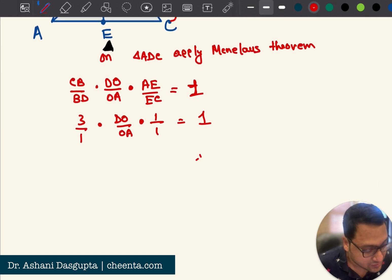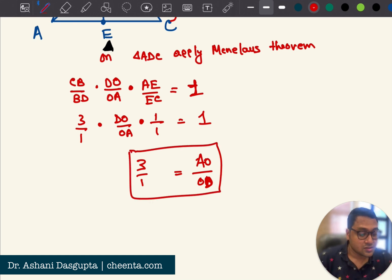I just cross-multiply to get AO by OD, AO by OD is three is to one. The same thing that we got using barycentric coordinates. So we can use the Menelaus's theorem or we can use the barycentric coordinates. I think this is pretty awesome that you can do a same problem in different ways.